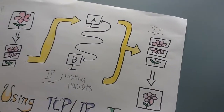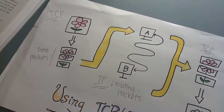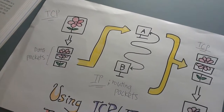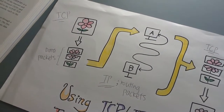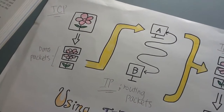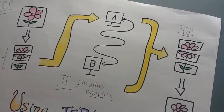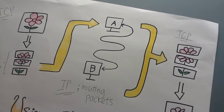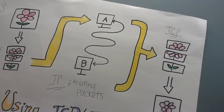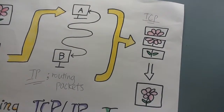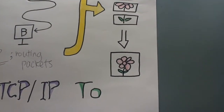For example, when we want to send an image by TCP, it will divide the image into maybe three parts and send them to another computer using IP. When the computer receives the image, it will reassemble the different parts into one image that a human can understand.